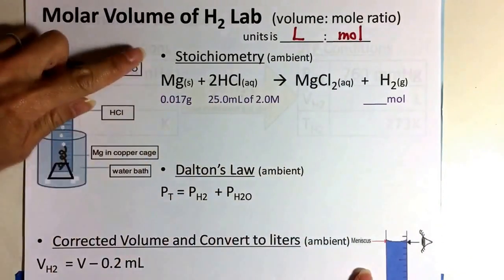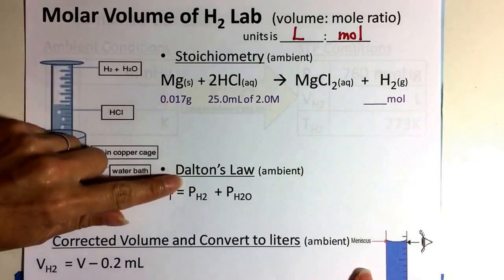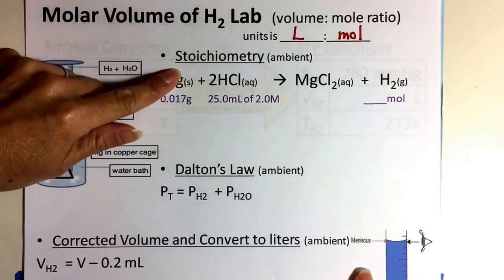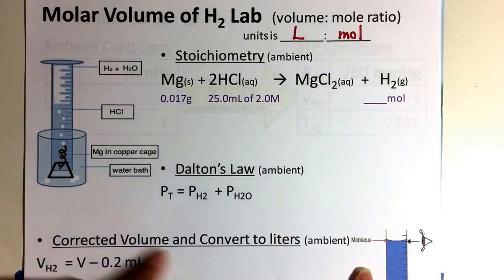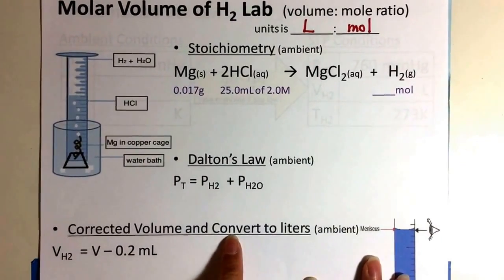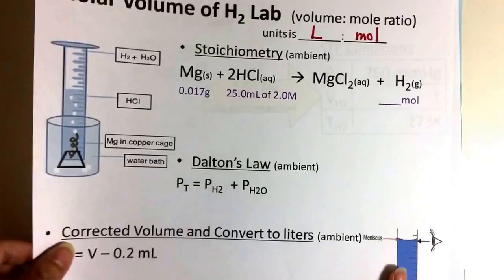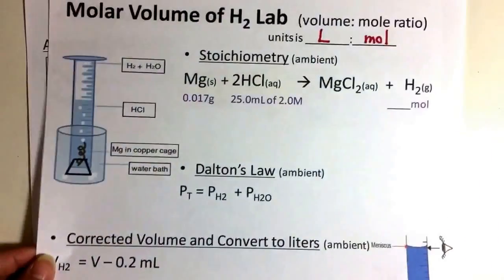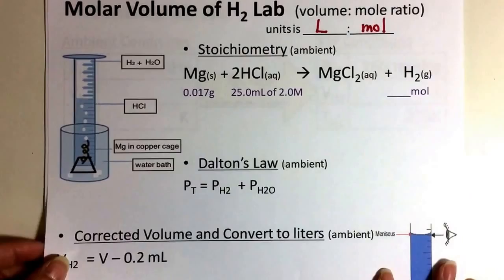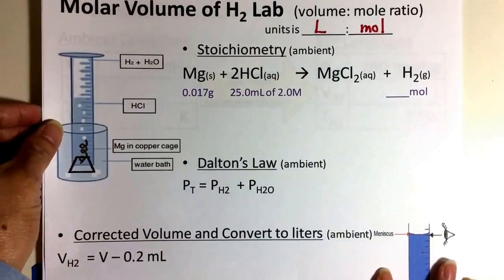So what we have is there are many components to this lab. There's a stoichiometry aspect, there's a Dalton's aspect to it, and then there's a little bit of something new to us which is the idea of corrected volume. And we also have combined gas law. So this is a multi-concept lab which is really great for the critical thinkers that we are.